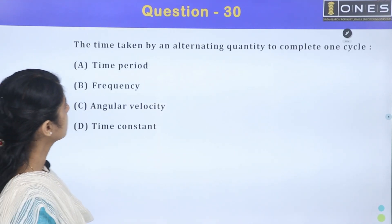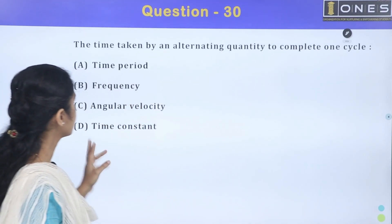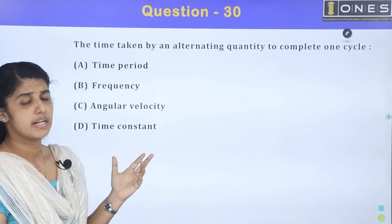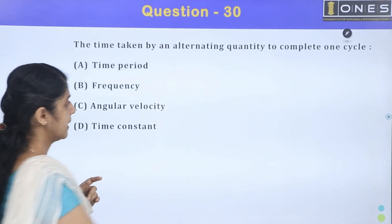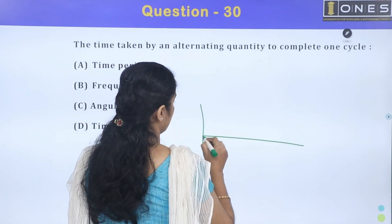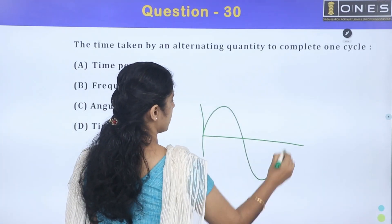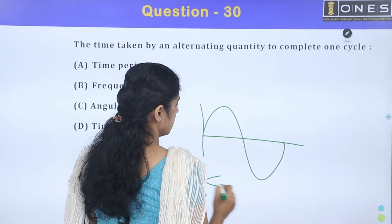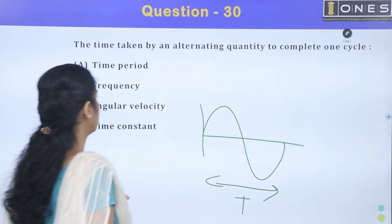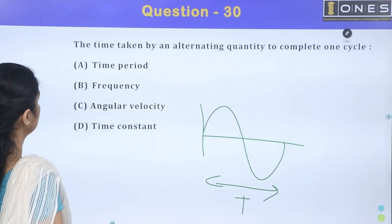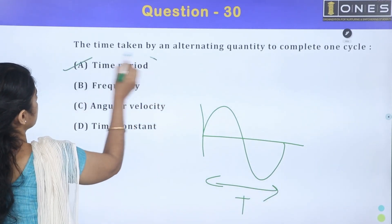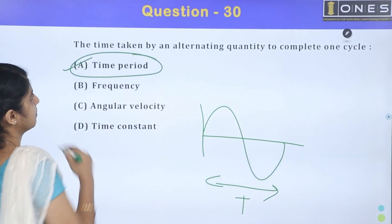Next question: time taken by an alternating quantity to complete one cycle. One complete cycle is equal to the time period. T equals the time period. Option A — time period.